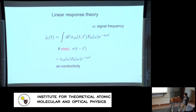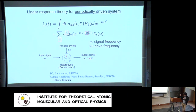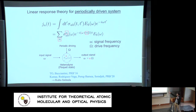If I have a static system, my conductivity is translation-time invariant, so performing a Fourier transform the input and output have the same frequency. But if I have a driven system, my conductivity tensor has time periodicity, and using that time periodicity, the input and output signals have different frequencies — the output has frequency omega plus n times capital Omega, where capital Omega is the driving frequency. So we convert small omega to small omega plus n times capital Omega.